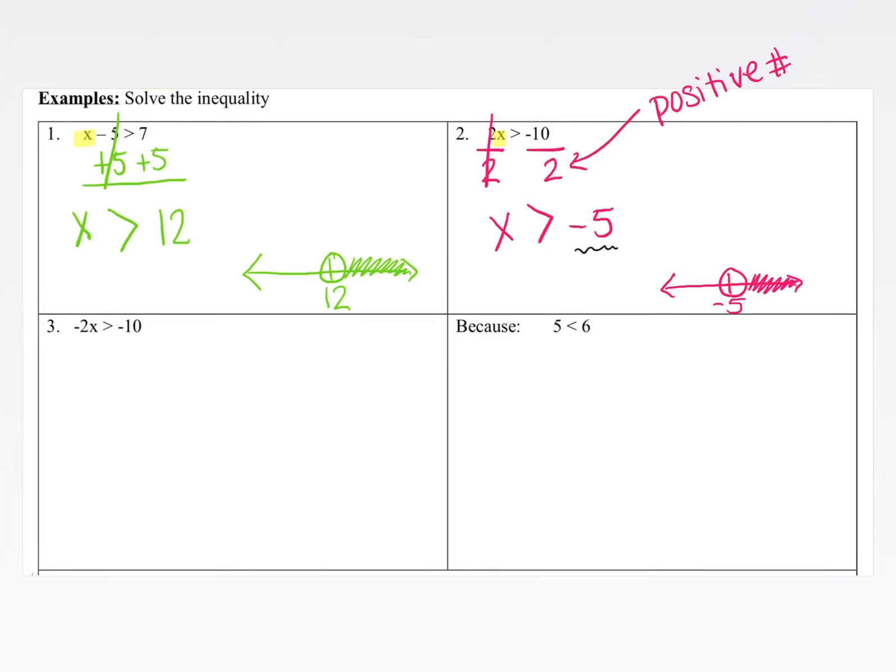Now in our next example, we have negative 2x is greater than negative 10. So this is very similar to example number 2. We're going to divide because this is negative 2 times x. So we're going to divide both sides by negative 2. Negative 2 divided by negative 2 is just 1x, so we're left with x. And negative 10 divided by negative 2 is positive 5.